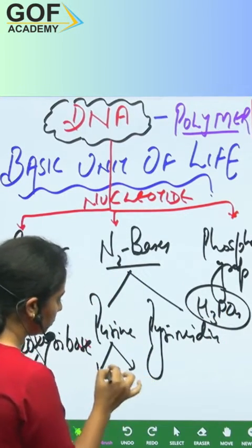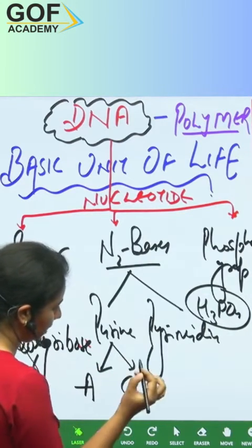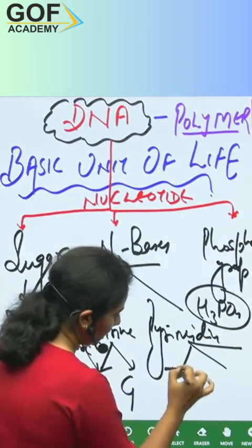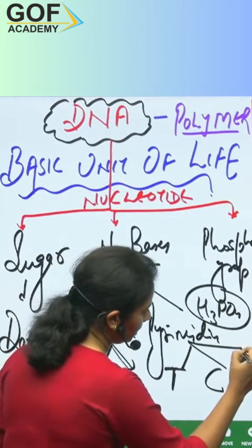The purines are of two types - that is adenine and guanine. And the pyrimidines can be of three different types: T, C, and U.